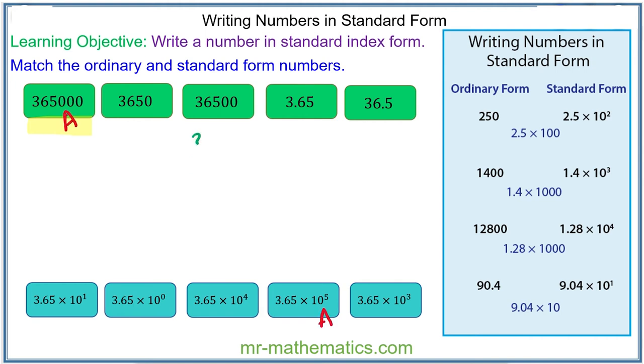For 3,650 we have 3.65 multiplied by 1,000. So 3.65 multiplied by 10 to the power of 3. So this one matches with this one.